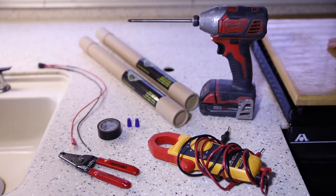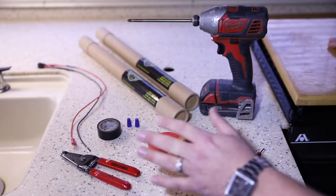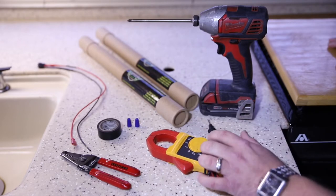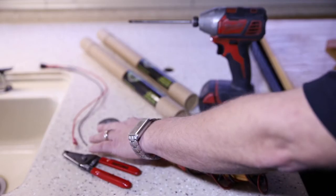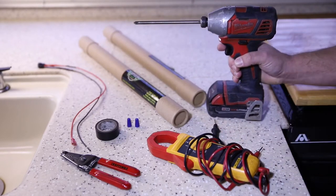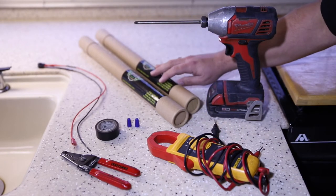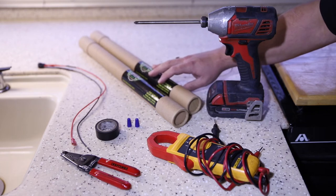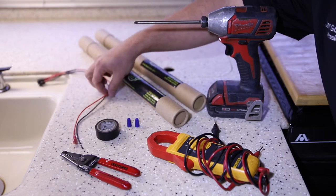Here on the counter we have all the basic tools that are required to do this job: standard wire strippers, voltage tester, electrical tape, wire nuts, screw gun, the two T8 fluorescent LED tube replacements, and the wiring harness.